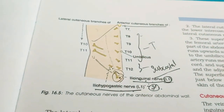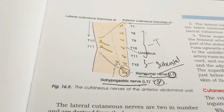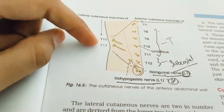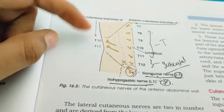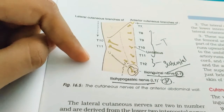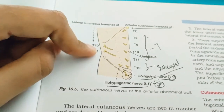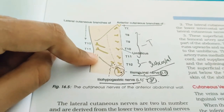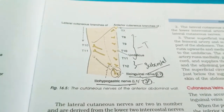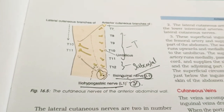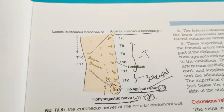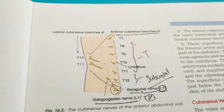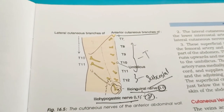For lateral cutaneous branches, only T10 and T11 are the lateral cutaneous branches supplying the lateral side of the anterior abdominal wall. They are derived from the lower two intercostal nerves.